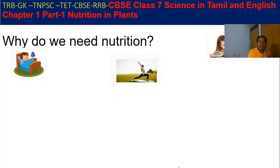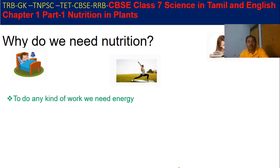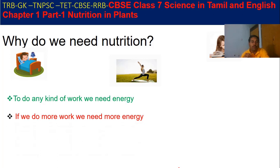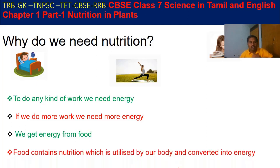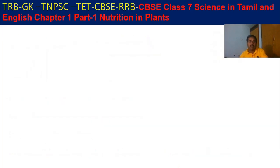Every kind of energy we need for that purpose — we are going to take some nutrition from different kinds of plants and also from some other foods from the animal side. For any kind of work we need energy; if we do more work, we need more energy. We get energy from food. Food includes different kinds available in our market. Food contains nutrition which is utilized by our body and converted into energy.